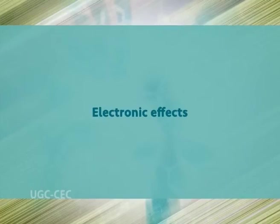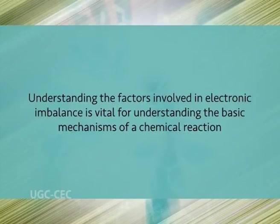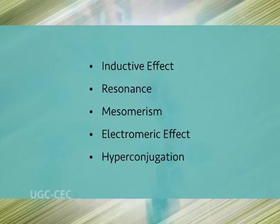Since bromine is more electronegative than carbon, the electrons move to the bromine, giving a tertiary butyl cation and a bromide anion. Understanding the factors involved in electronic imbalance is vital for understanding the basic mechanisms of chemical reactions. In chemistry we encounter these types of electronic effects: the inductive effect, resonance, mesomerism, electromeric effect, and hyperconjugation.